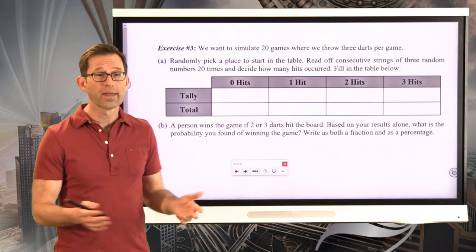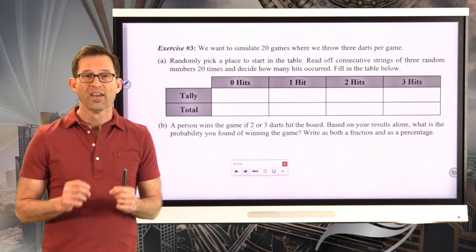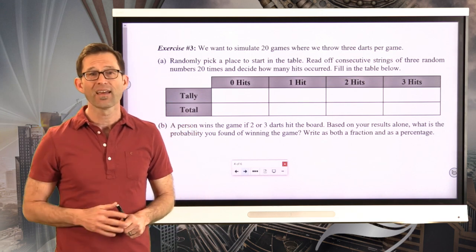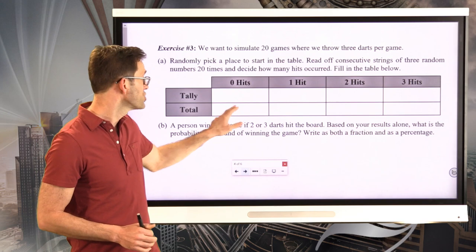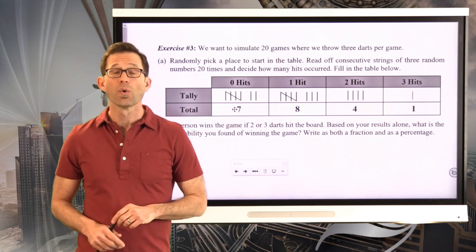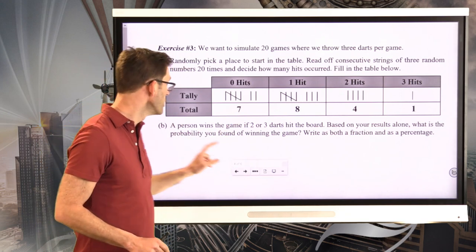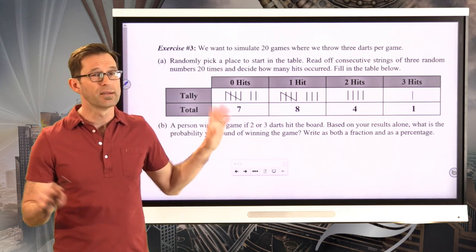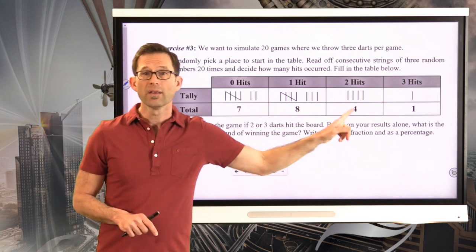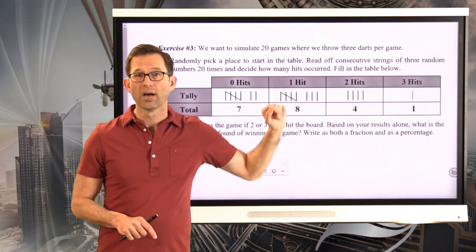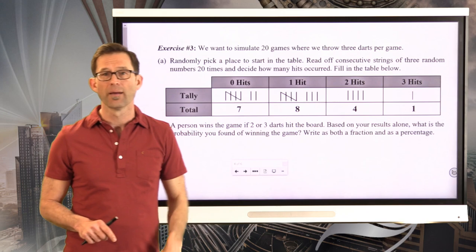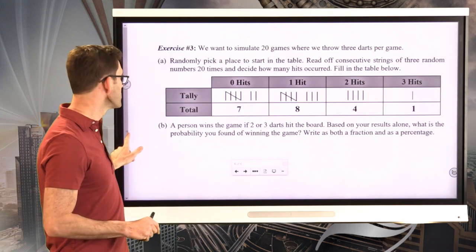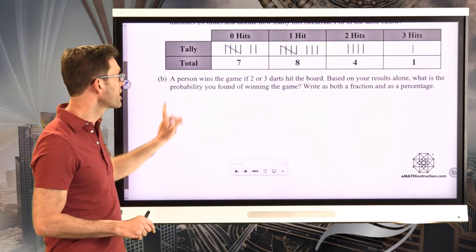All right. Fantastic. Well, as always, when we do one of these simulations, whether it's flipping a couple of coins or throwing two dice or whatever, I can't know what results you got. But I can show you the results I got. So when I played the game, and I really did go through it, it was kind of fun. I found that seven of those 20 times I didn't get anything, eight of the times I got one hit, four of the times I got two hits, and only one of the time did all three darts go in in my simulation.